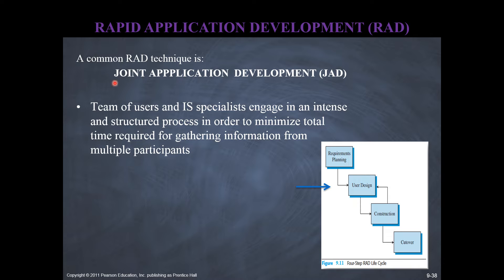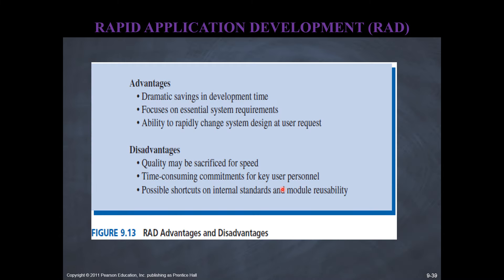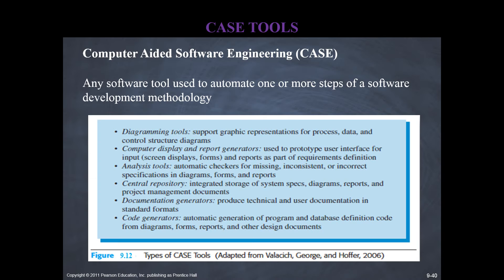JAD is a teamwork approach similar to Delphi decision making, where everybody gets together and follows certain scripts to quickly come up with user requirements and finalize them. That's one feature of rapid application development — joint application development methodology is used. Another defining characteristic of RAD is that it involves using a number of computer-aided software engineering tools, or CASE tools, which are computerized tools to speed up some of the critical steps in developing an information system.